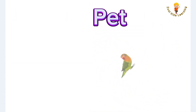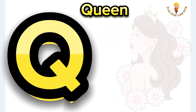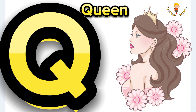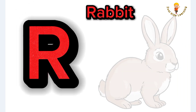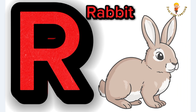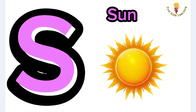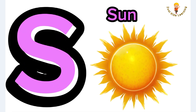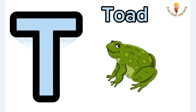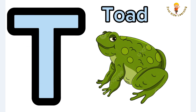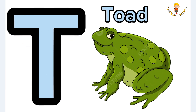Q is for queen, qu-qu-queen. R is for rabbit, r-r-rabbit. S is for sun, s-s-sun. T is for toad, t-t-toad.